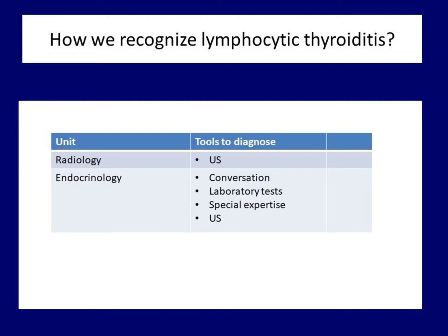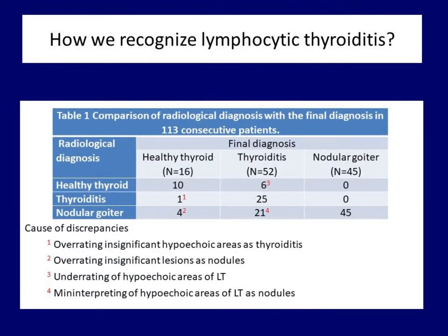I give here the data of 113 consecutively examined patients who presented in a radiological unit before the clinical examination. Let's see the discrepant diagnoses. The single healthy patient who was misdiagnosed as having lymphocytic thyroiditis was a man with decreased echogenicity caused not by thyroiditis but by technical reasons. Four patients were falsely diagnosed as having nodules: three had small cystic areas corresponding to dilated macrofollicles, while in the fourth patient an intrathyroidal vessel was misinterpreted as a nodule. Overall, a third of people who turned out to be healthy had a misdiagnosis. Let's see those patients whose final diagnosis was lymphocytic thyroiditis.